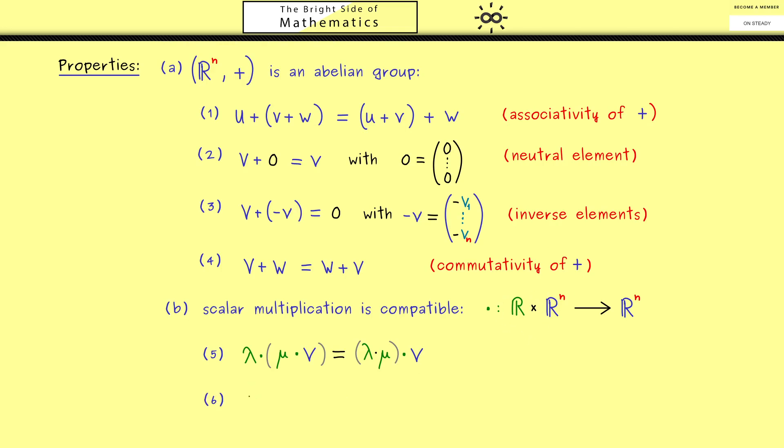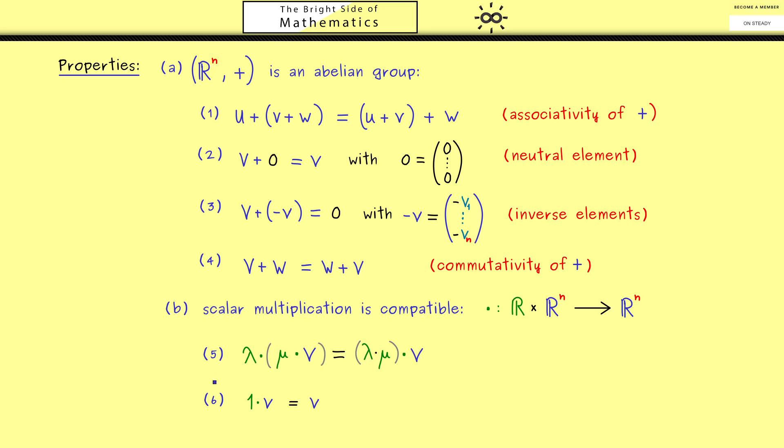Then the next compatible rule I want is that when I scale with 1 we don't change anything. So 1 times v is v again. Of course these two rules we immediately see for our scalar multiplication in R^n. And with this only two properties are missing.